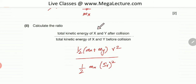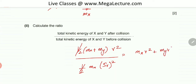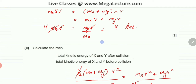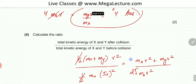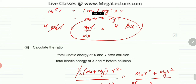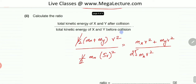Setting up the ratio: [½(MX + MY)V²] divided by [½ MX (5V)²]. The ½ cancels on both sides. The numerator becomes MX·V² + MY·V², and the denominator becomes 25 MX·V². We now use the previously found relationship MY = 4MX and substitute.